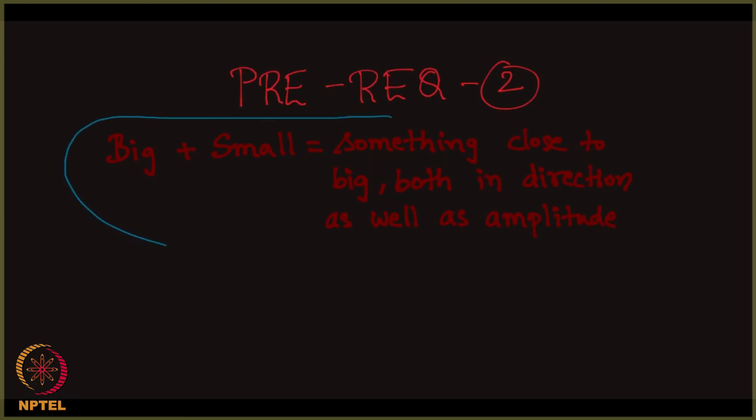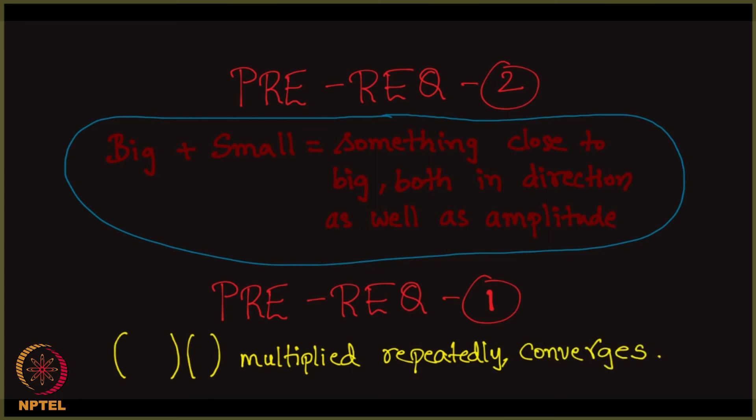This was our prerequisite 2 and it will help if we can recollect prerequisite 1. Can you all recollect what is prerequisite 1? Prerequisite 1 was simply the fact that when you multiply a matrix to a vector repeatedly it converges. Please ensure that you do not go further without understanding this prerequisite 1 and 2.